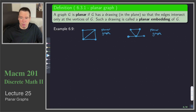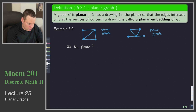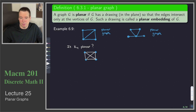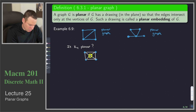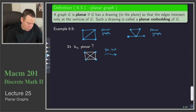Here's a question: is K4 planar — the complete graph on four vertices? Let's get a picture for it. Our K4 looks like this, where every vertex is connected to every other vertex by an edge. We typically would draw it in such a way that there is a crossing of two edges, namely the two diagonal edges, where they are intersecting but it's not at a vertex. So is K4 planar? We'd have to try to find a planar embedding. The answer is yes, it is planar, but we can't see it from the drawing we have on the left.